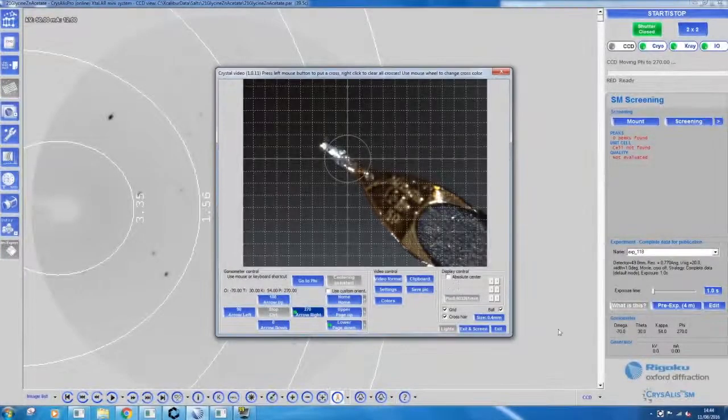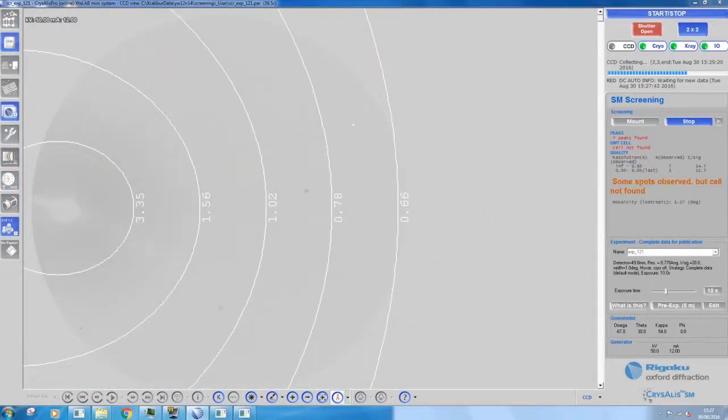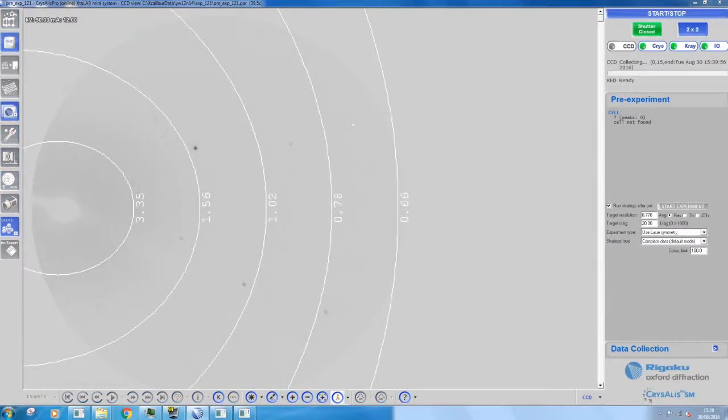Using the screening option in the software allows for preliminary diffraction data to be collected. From the few frames collected, you can decide whether or not the sample is suitable for a full data collection, or if a new crystal needs to be selected. This is a good diffraction pattern. It has spots that are regularly spaced and evenly distributed. The spots should be discrete and circular. A poor pattern could have streaks, diffuse clouds, multiple or split spots. If there are only one or two spots, then the crystal is too weakly diffracting.